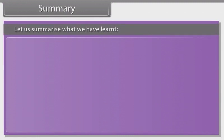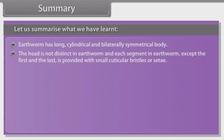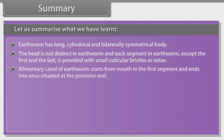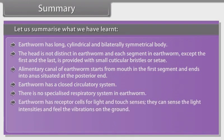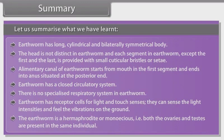Let us summarize what we have learnt. Earthworm has a long, cylindrical, and bilaterally symmetrical body. The head is not distinct in earthworm, and each segment except the first and the last is provided with small cuticular bristles or setae. The alimentary canal of earthworms starts from the mouth in the first segment and ends at the anus at the posterior end. Earthworm has a closed circulatory system. There is no specialized respiratory system in earthworm. Earthworm has receptor cells for light and touch; it can sense light intensities and feel vibrations on the ground. The earthworm is a hermaphrodite or monoecious — both ovaries and testes are present in the same individual.